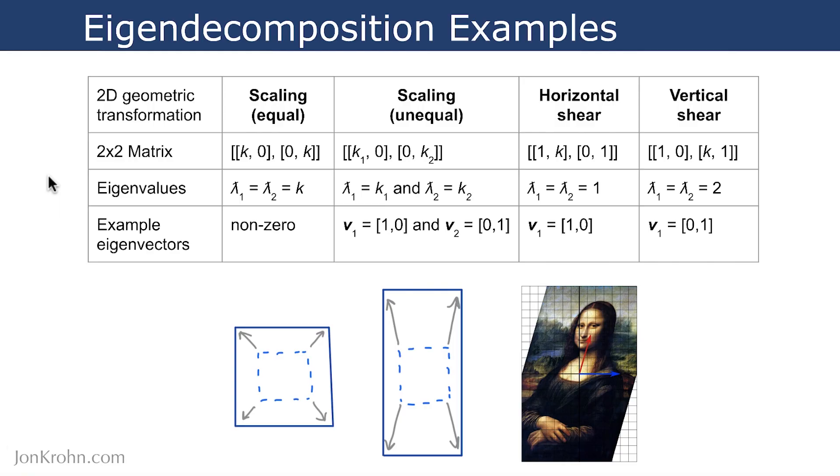Alright, let's start off with some relatively simple examples of eigendecomposition. So, returning to a topic, affine transformations or 2D geometric transformations that we already talked about right at the beginning of this segment on eigendecomposition. Of all the videos that we've been talking about eigenvectors and eigenvalues in this machine learning foundation series, we started off by talking about affine transformations like scaling and shearing.